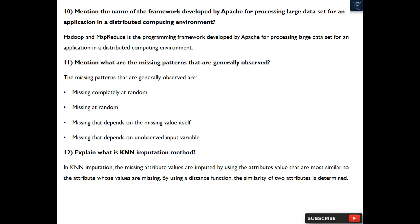Question 12: Explain what is KNN imputation method? In KNN imputation, the missing attribute values are imputed by using the attributes value that are most similar to the attribute whose values are missing. By using a distance function, the similarity of two attributes is determined.